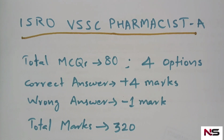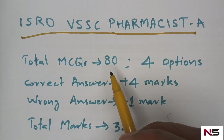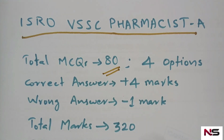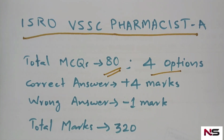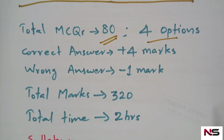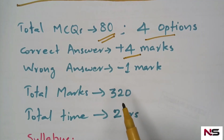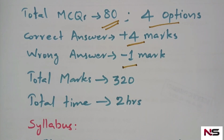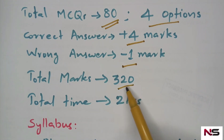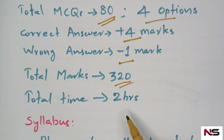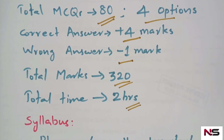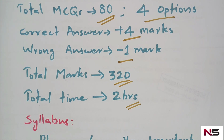There will be a total of 80 multiple choice questions for this exam. Each question has four options A, B, C, D. For the correct answer they will give you plus four marks, and for the wrong answer there will be negative one mark. The total mark will be 320. The time given for this exam is two hours, so you have to attend 80 questions in two hours.